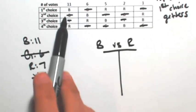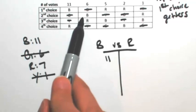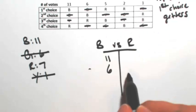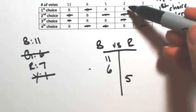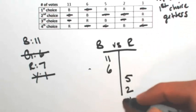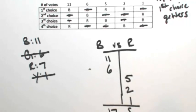In the first column, B gets preferred more, so B gets 11. Same thing in the second column, so B gets 6 more. In the third column, R is over B, so R gets 5. In the fourth one, R is over B, so 2 more. And the last one, one more. So all together, 17 to 8.